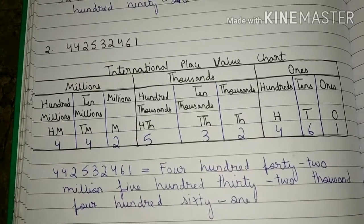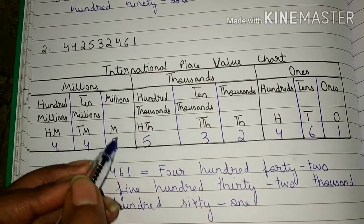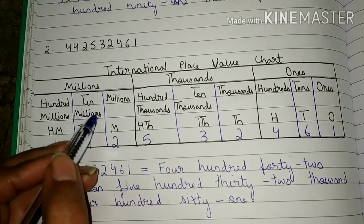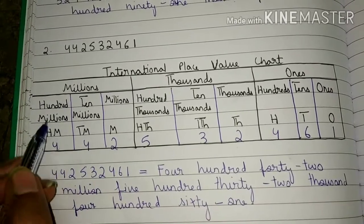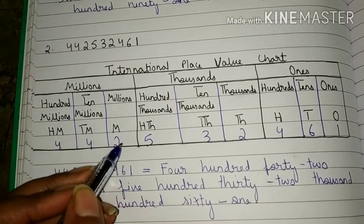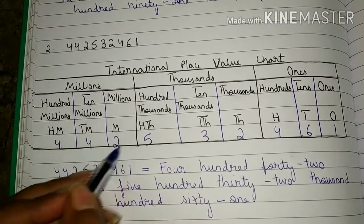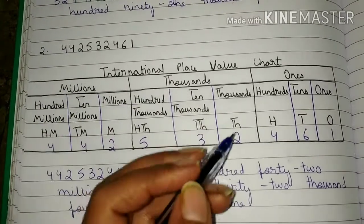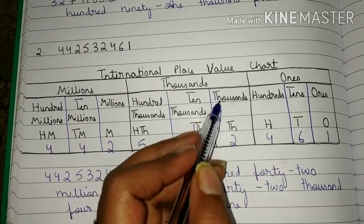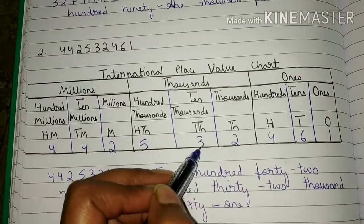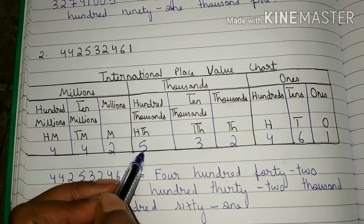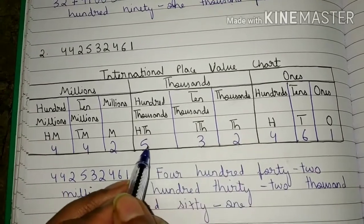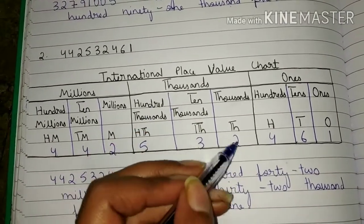Now look here. Two is in millions place, four is in ten millions place, and four is in hundred millions place, so we read these three digits together as four hundred forty-two million. Two is in thousands place, three is in ten thousands place, and five is in hundred thousands place, so we read these three digits together as five hundred thirty-two thousand.